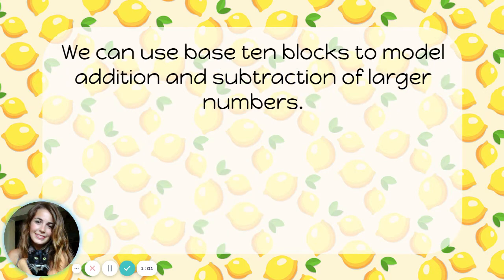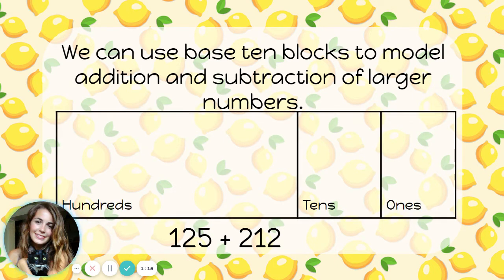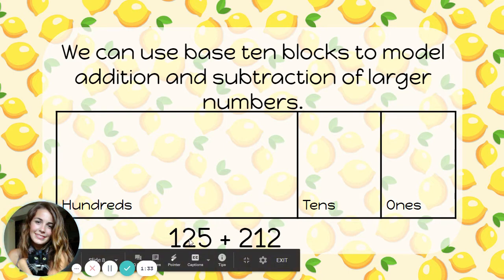We can use base ten blocks to model addition and subtraction of larger numbers, like the problem 125 plus 212. That's a lot of lemons, so let's use the blocks instead. I'm going to set up a place to keep track of all my hundreds blocks, tens blocks, and ones blocks. Keeping the hundreds, tens, and ones together is going to make it easier to see my answer. When I add using the base ten blocks, I'm going to start by making my first number, which is 125.